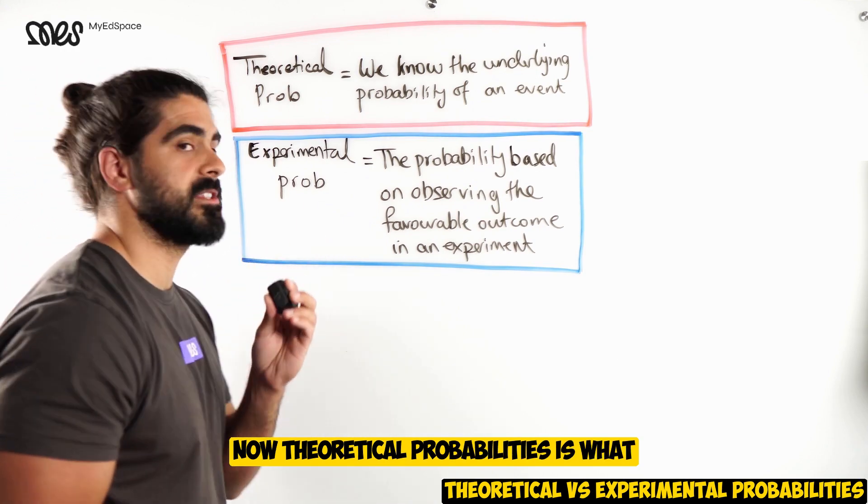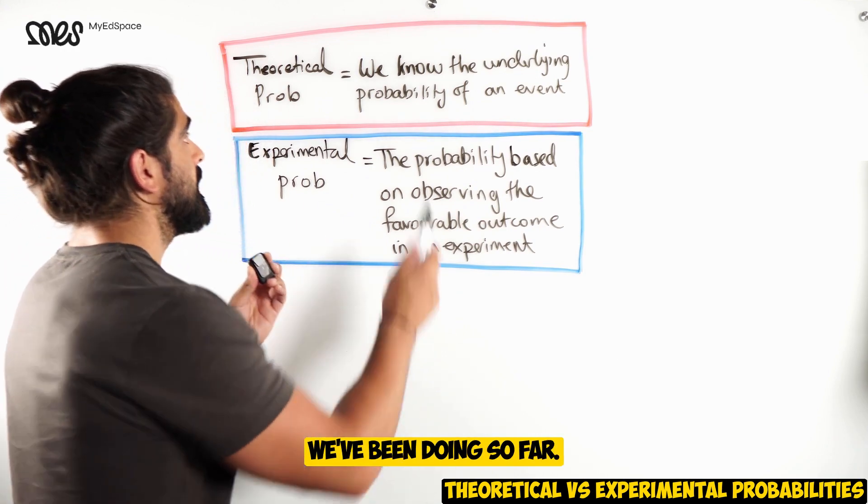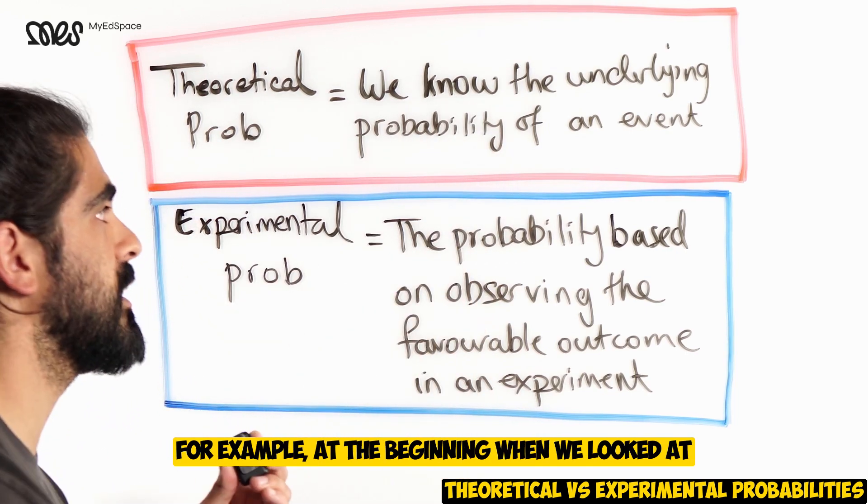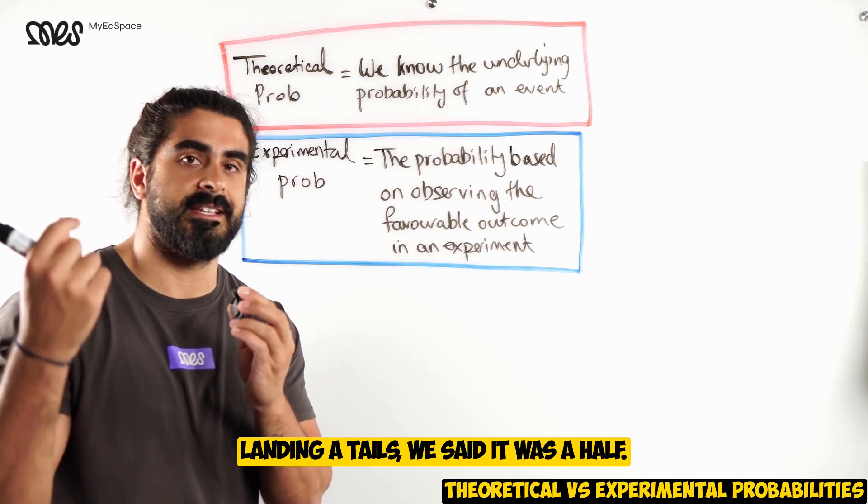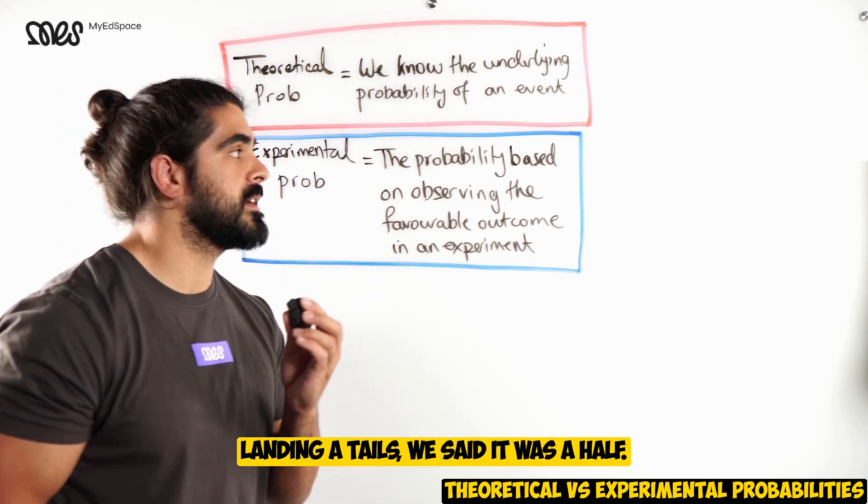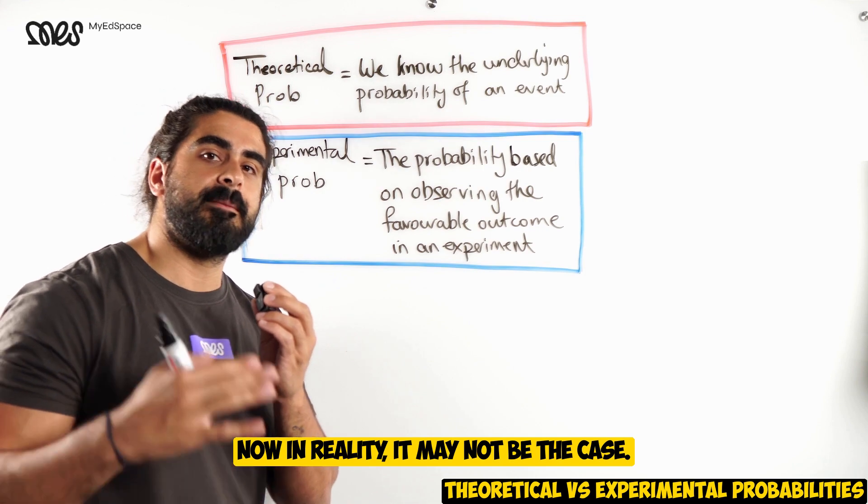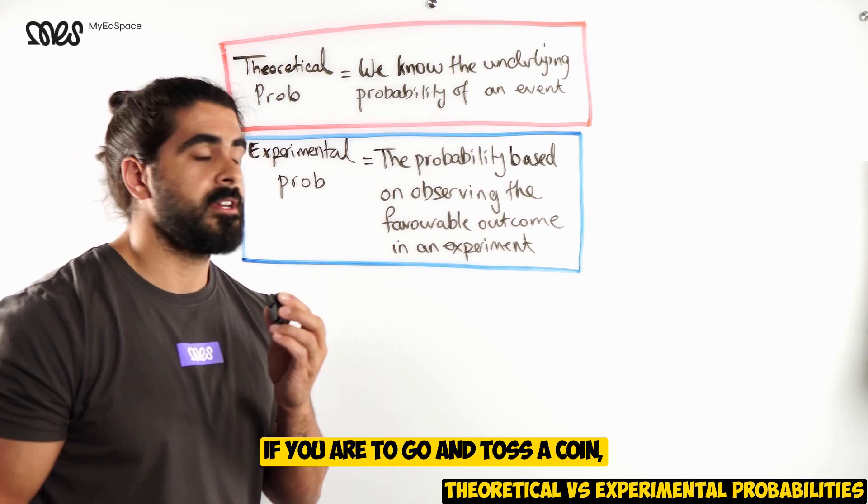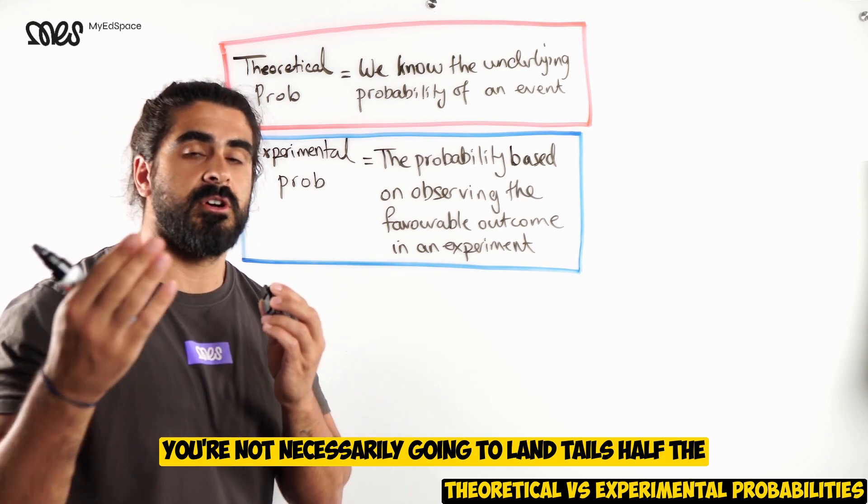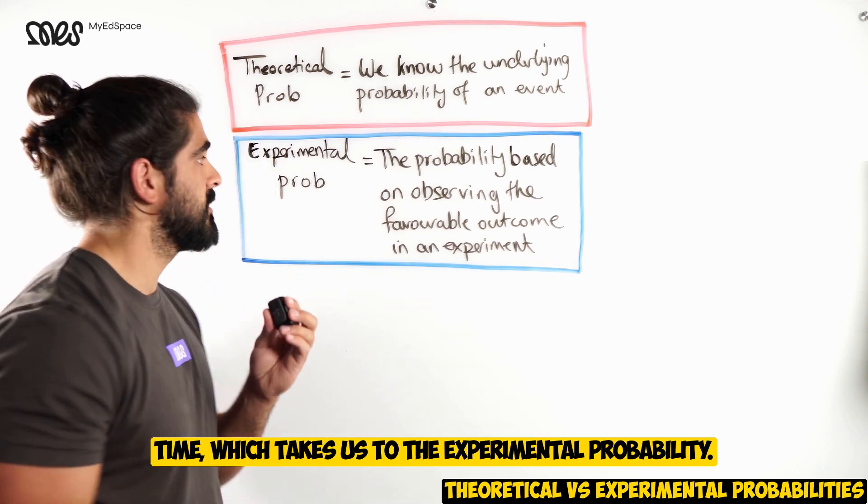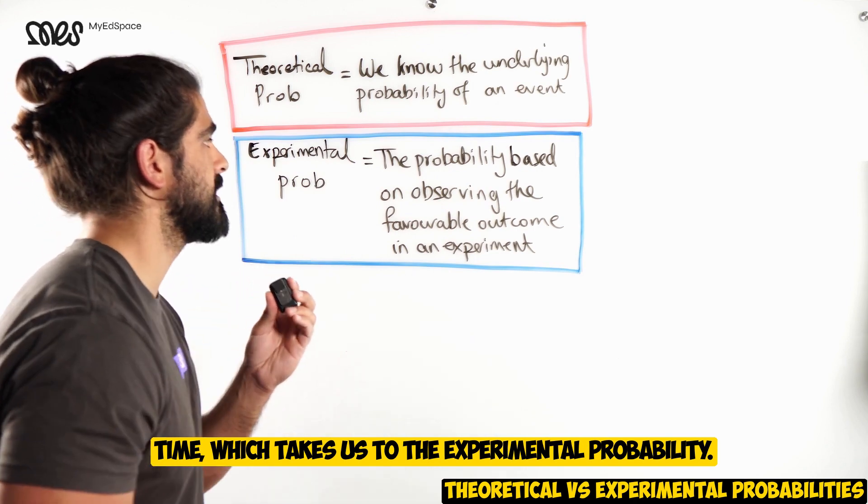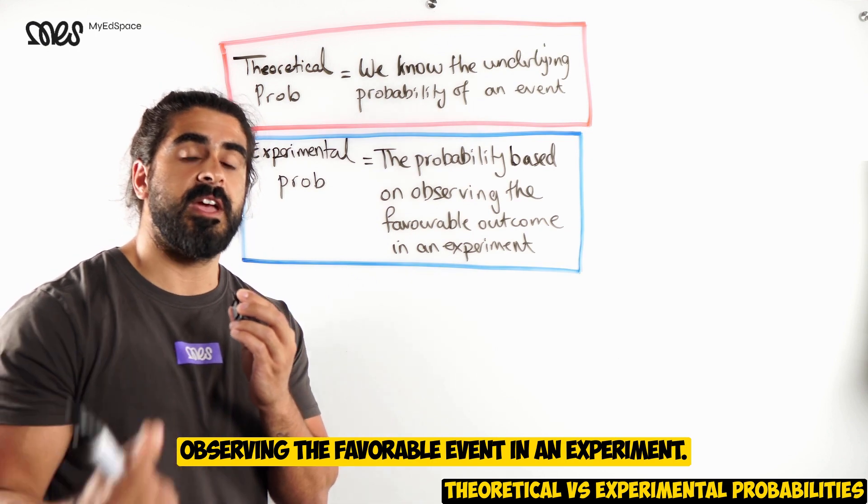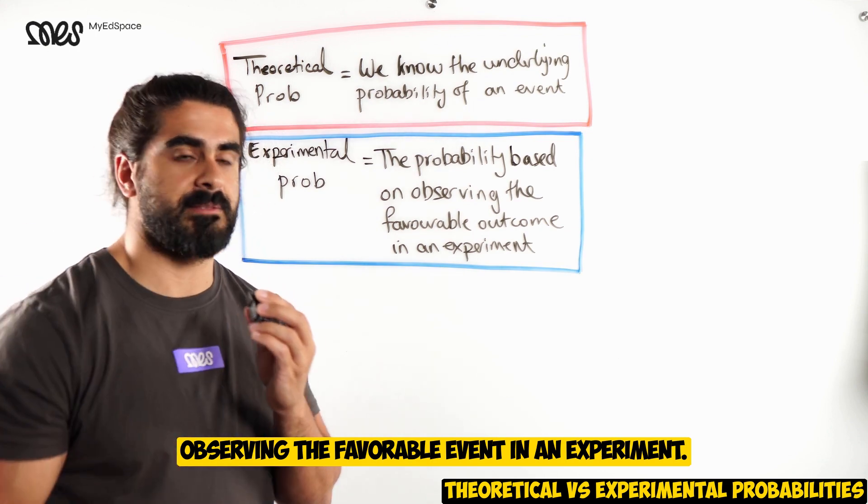The last thing I want to cover is theoretical versus experimental probabilities. Now, theoretical probabilities is what we've been doing so far. We know the underlying probability of an event. For example, at the beginning, when we looked at landing a tails, we said it was a half. Now, in reality, it may not be the case. If you are to go and toss a coin, you're not necessarily going to land tails half the time. Which takes us to the experimental probability.